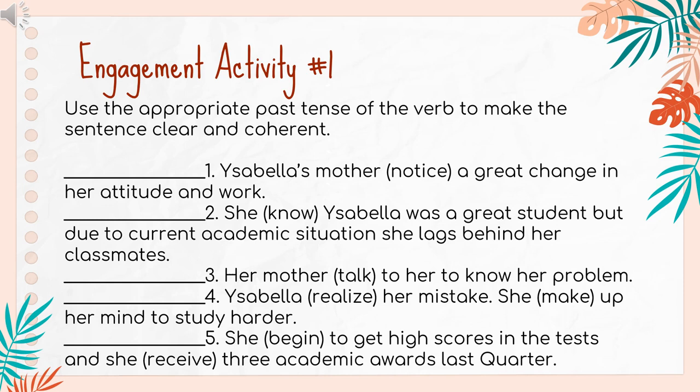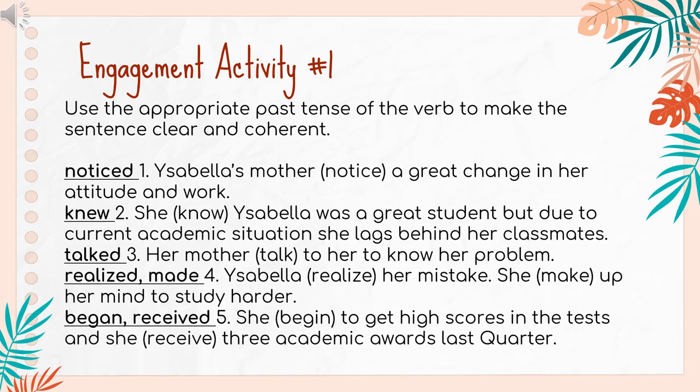Number three: Her mother talked to her to know her problem. The verb is "talk". Number four: Isabella realized her mistake. She make up her mind to study harder. The verbs are "realize" and "make". Number five: She began to get high scores in the test, and she received three academic awards last quarter. The verbs are "begin" and "receive". Let's check your answers. Did you get a perfect score? Great!